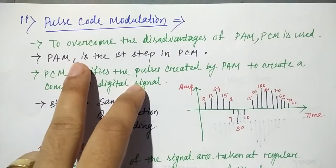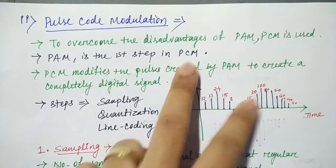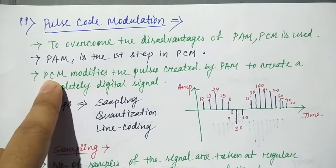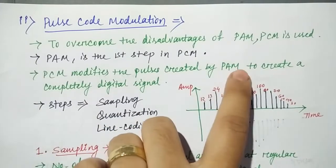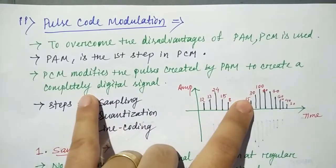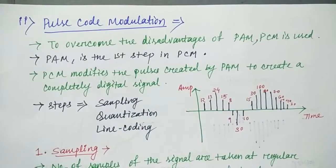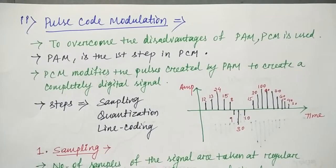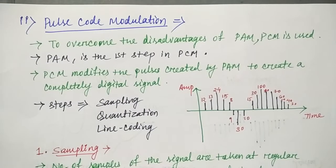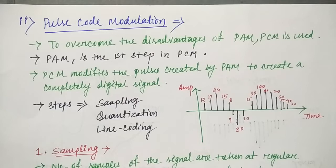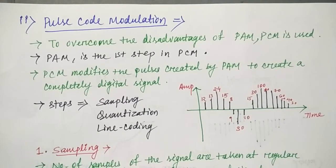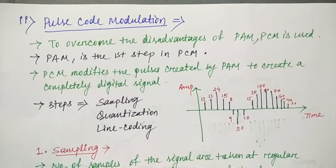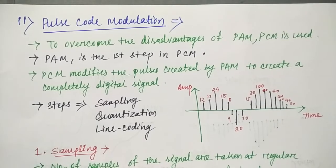Pulse Amplitude Modulation is the first step in PCM. What PCM does is it modifies the pulses created by PAM to create a completely digital signal. It takes the sampling from Pulse Amplitude Modulation, but then filters it and generates a digital signal.